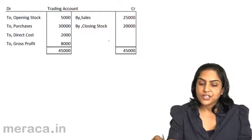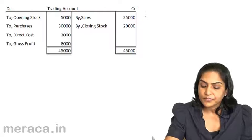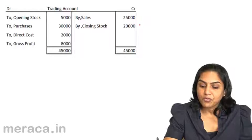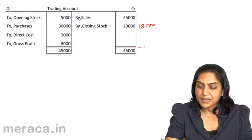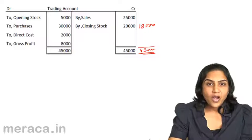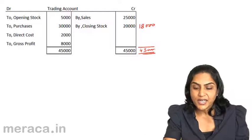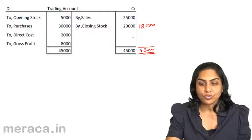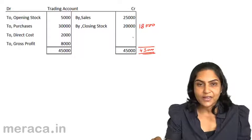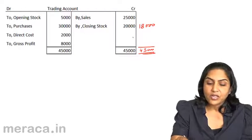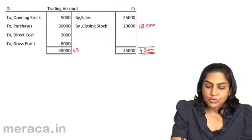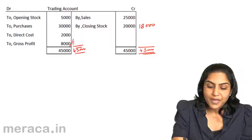Let us just assume that the closing stock is reduced to a value of 18,000. If this happens, all other figures remaining the same — basically, instead of assigning a value of 20,000 to closing stock, we are assigning a value of 18,000 — the effect on the profit is that this total will also be reduced to 43,000 and therefore gross profit would be 6,000.